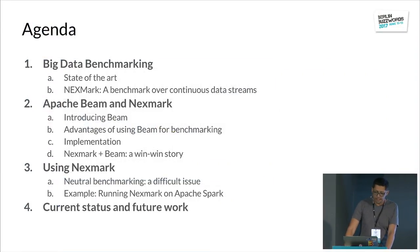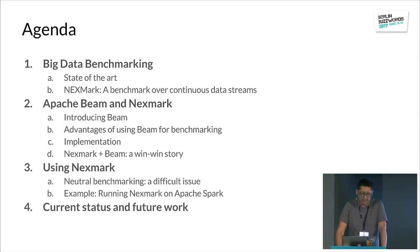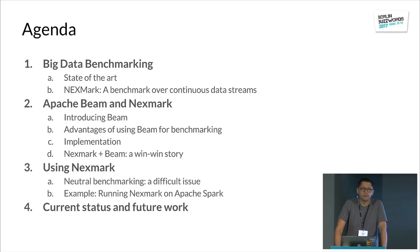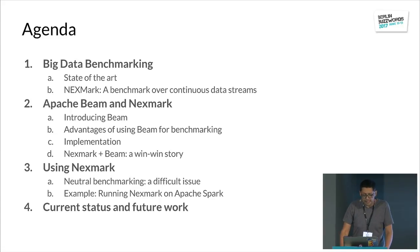Let's go with the agenda. We're going to talk first about big data benchmarking and the state of the art. We're going to introduce Nexmark, which is a research paper from the beginning of the 2000s. We'll talk about the implementation of Nexmark on Beam and see details about the Beam model. Finally, we'll look at how we use Nexmark, how to execute it, and discuss the current status of the project and future work. Note that this is an ongoing process.